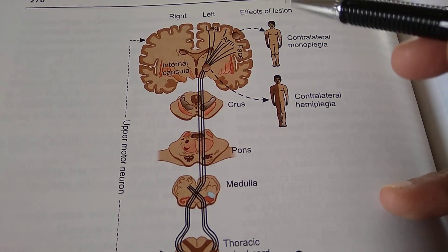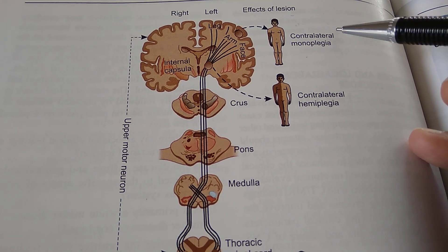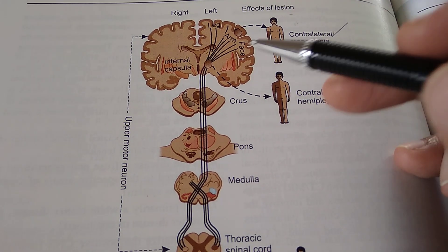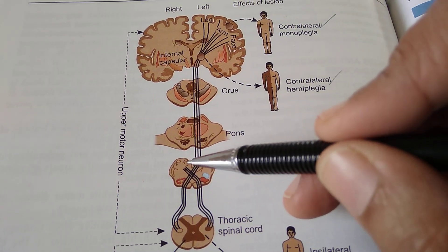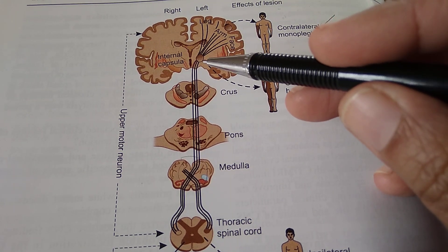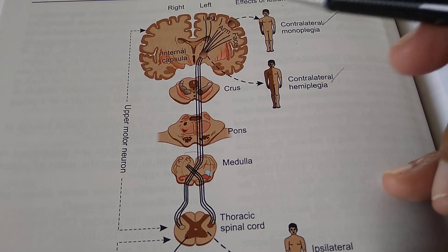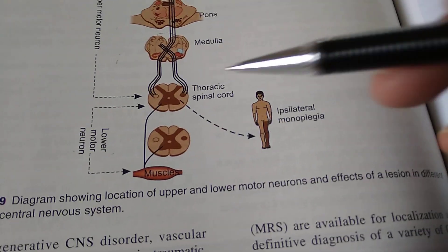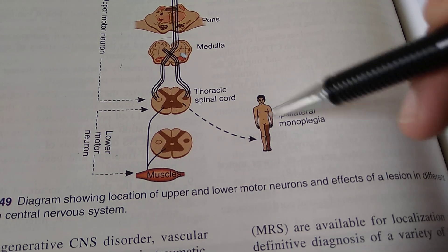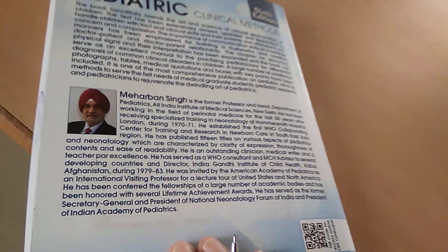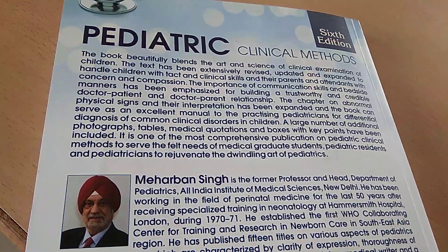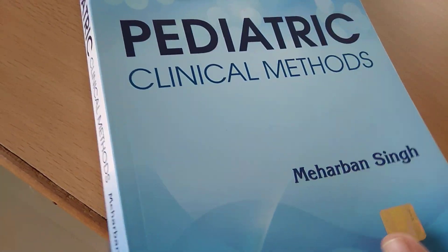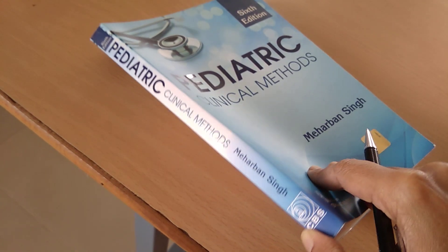In upper motor neuron lesion, the effects will be contralateral - on the opposite side - because of crossing. You can see the crossing in the medulla. So upper motor neuron lesion causes contralateral plegia, while in lower motor neuron lesion the affected side is ipsilateral. Hope you learned something from this book - Meherban Singh Pediatric Clinical Methods. Bye-bye!